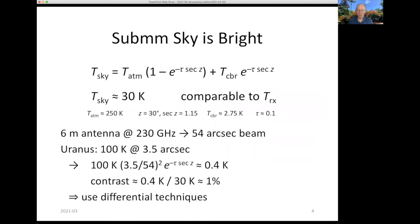The submillimeter sky is bright. Unlike in the optical where we have bright stars against a dark sky, in the submillimeter the sky is always bright. This is the formula for calculating the equivalent sky brightness temperature, and for reasonable values of the parameters, the sky temperature at 230 gigahertz is about 30 degrees Kelvin, which is comparable to the receiver temperature in the SMA. When we look at sources, we're looking at very low contrast sources. For example, looking at Uranus, which has a brightness temperature of maybe 100 degrees and a size of about three arc seconds, with one of the SMA antennas which has a 55 arc second beam, the contrast is only about 1% of the sky brightness.